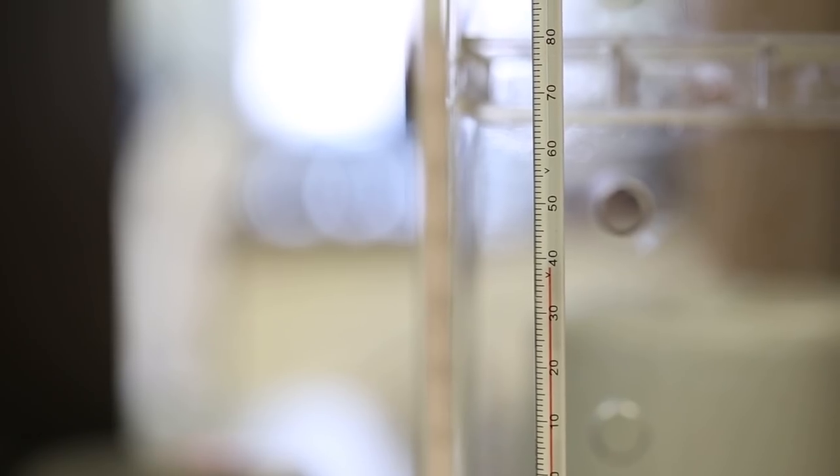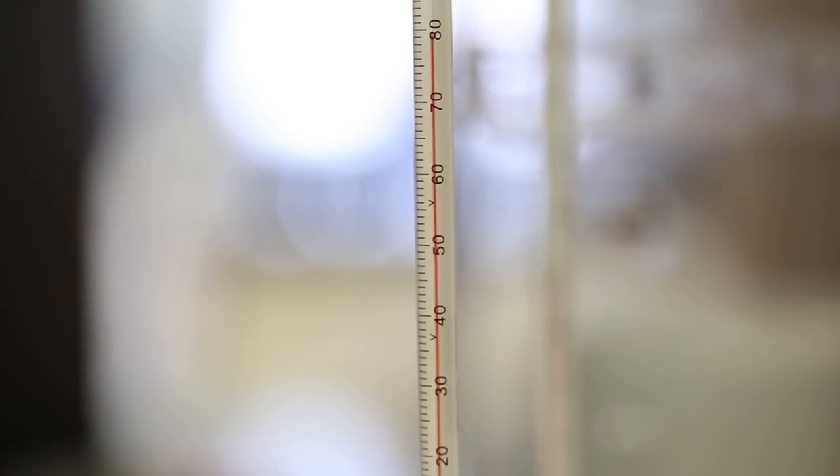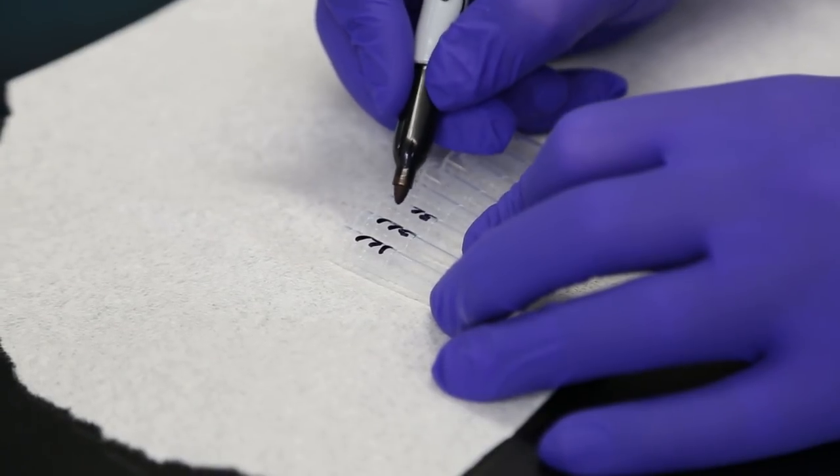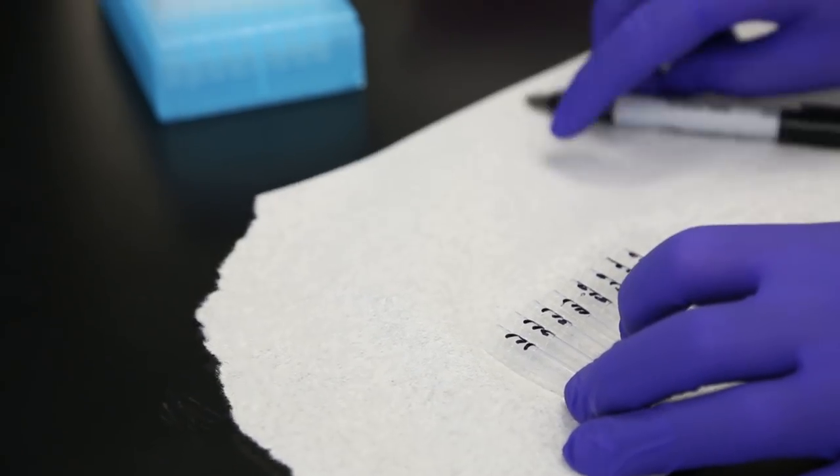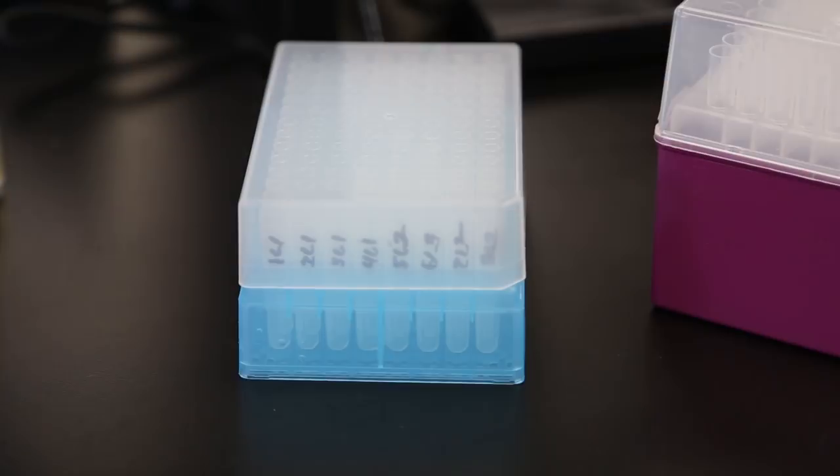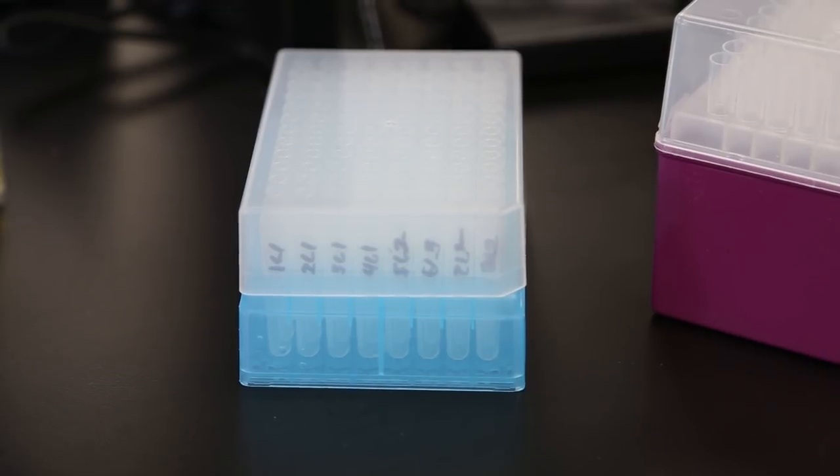Next, verify that the temperature on the first two heater blocks is 37 degrees and 80 degrees Celsius respectively. Take a strip of the 1.2 milliliter cluster tubes and mark them to correspond to your labeled samples. Return the cluster tubes to the rack and label any additional tubes as needed.